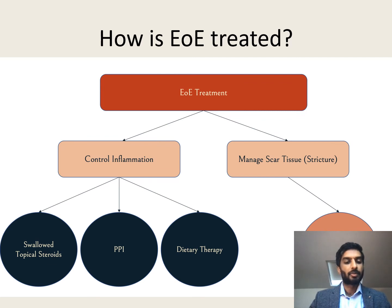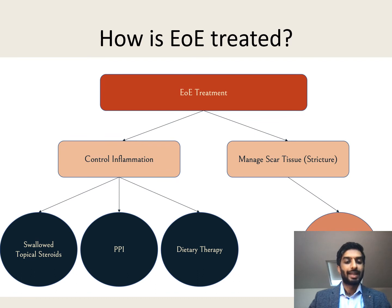The first facet of treatment is to get the inflammation under control, and we have three treatments to do this. Probably the most commonly used, and the one for which we have the most evidence, is swallowed topical steroids — many patients with EOE would be familiar with medicines such as flixotide or budesonide, which are repurposed asthma medications that we get the patient to swallow. The second type is PPIs or proton pump inhibitors — tablets that can also be effective. The third form is diet, which works by identifying the specific trigger foods in that individual and getting them to eliminate those foods.